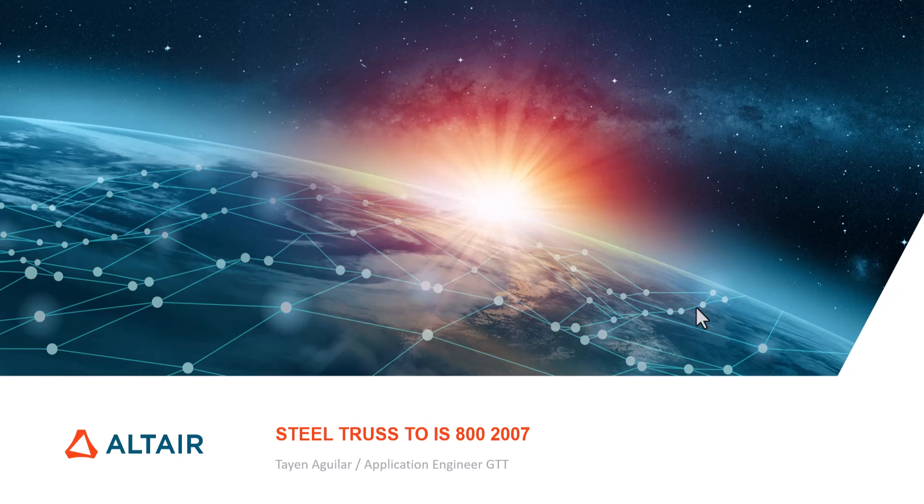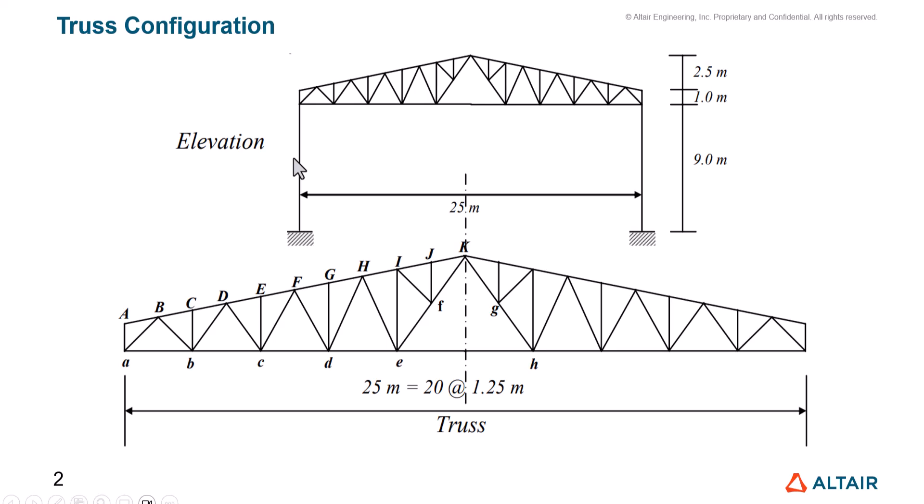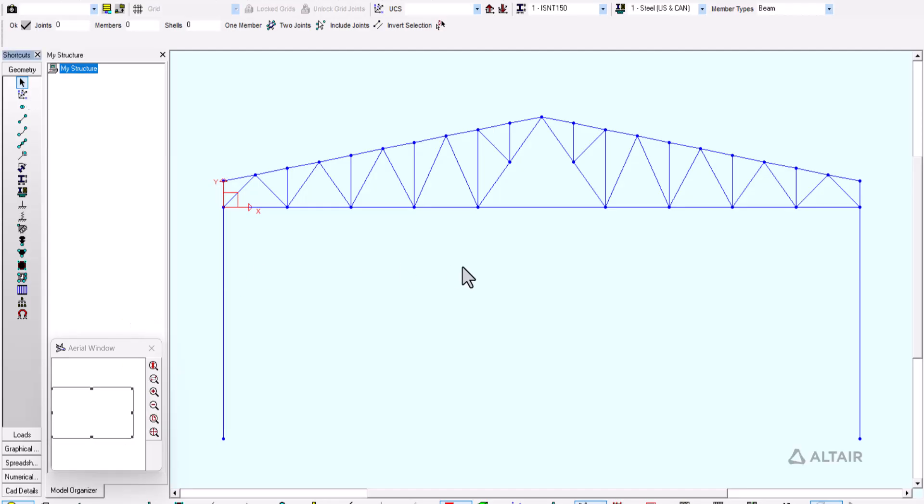We're going to see how each compare and how S-Frame optimizes these processes. We begin with the truss configuration. This is a 9-meter elevation truss that goes along a 25-meter span with a total height of 3.5 meters. We have designed this truss with different width configurations.